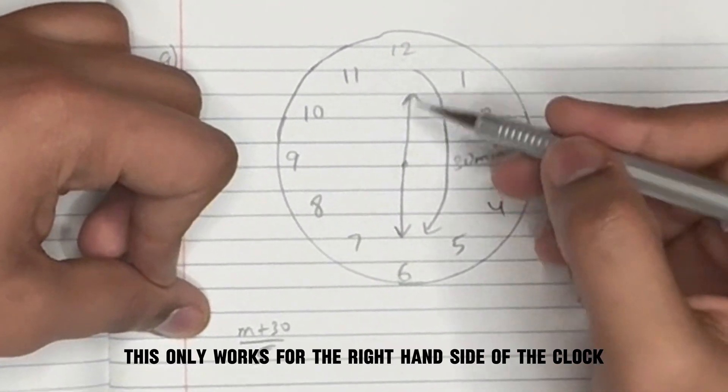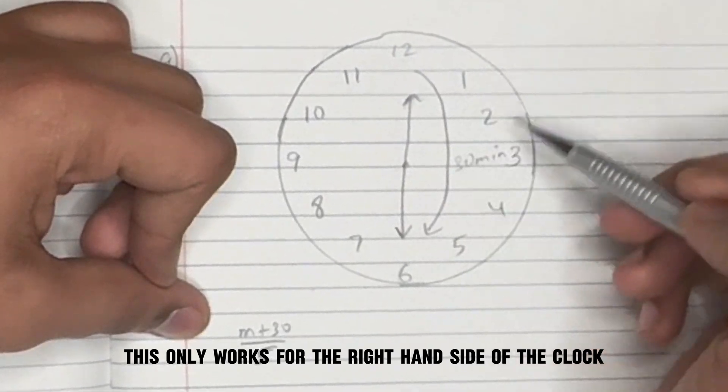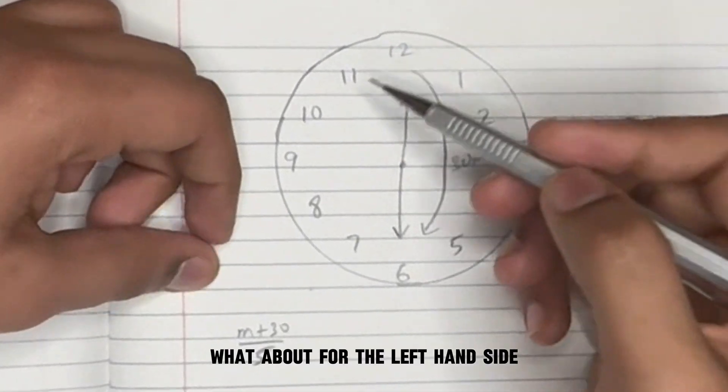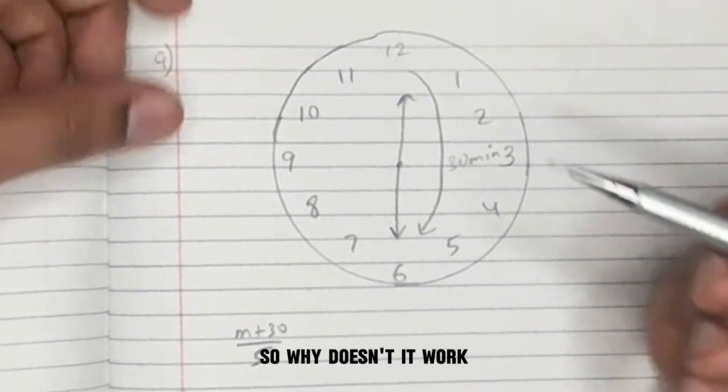This only works for the right-hand side of the clock. What about for the left-hand side? So why doesn't it work?